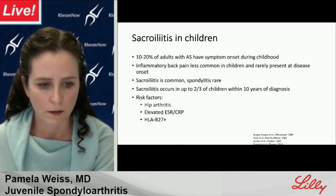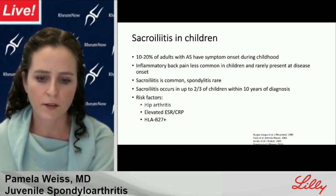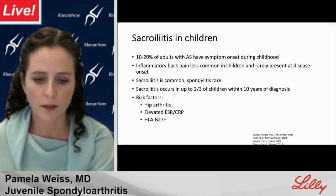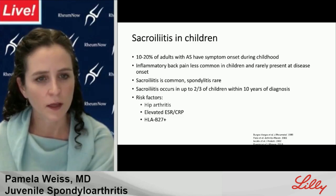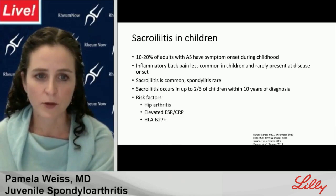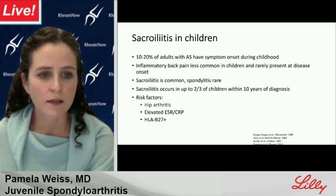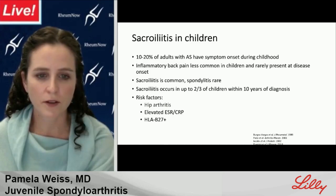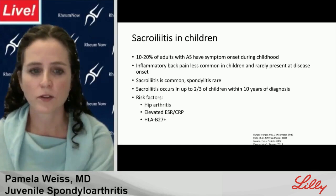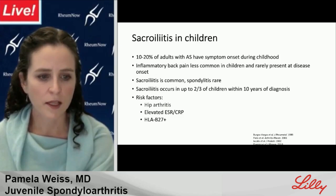Moving to axial disease: 10 to 20% of adults with AS have symptom onset during childhood. Inflammatory back pain is less common in children and rarely present at disease onset. Sacroiliitis is common; spondylitis is rare. Sacroiliitis occurs in up to two-thirds of children within 10 years of diagnosis. Known risk factors in the juvenile population include hip arthritis, elevated inflammatory markers, and HLA-B27 positivity.